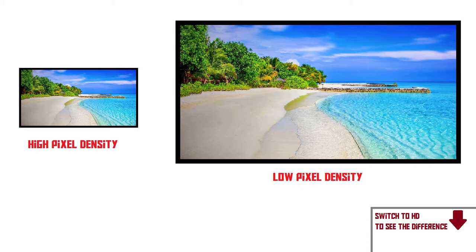Something else that is very important is pixel density, which refers to the amount of pixels per square centimetre. Here's an example: let's say we've got a tiny mobile phone screen with 2 million pixels on it, and a large screen with 2 million pixels on it. Technically, they both display the same amount of detail, but in reality the small screen will look a lot better because the pixels on it are way smaller, which means you can't see them. So pixel density is something that matters too.